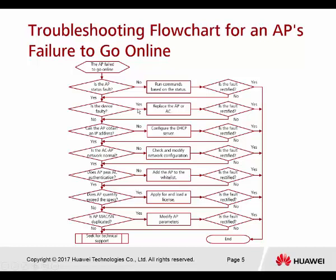Try to replace the AP, or maybe the controller, but seldom do people replace the controller. Try replacing another AP and test the connection again. Once you've already replaced but haven't yet solved the problem, we still don't know if it's an AC problem or an AP problem. So now check: can the AP obtain an IP address?